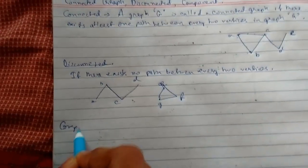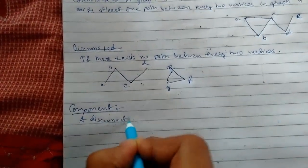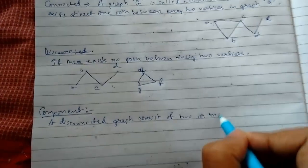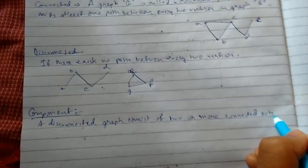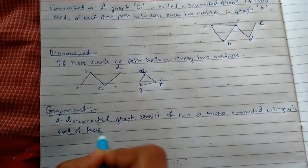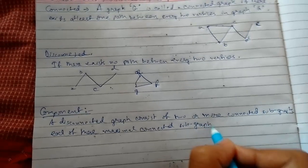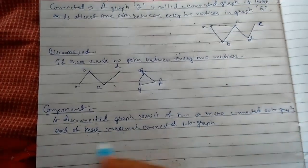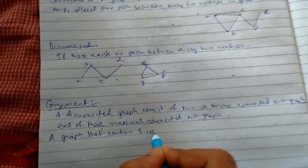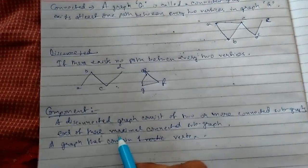Now, component of a graph. A disconnected graph consists of two or more connected subgraphs. Each of these maximal connected subgraphs is called a component of the graph. Also, a graph that contains only one vertex is also considered a connected graph.